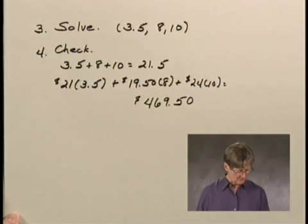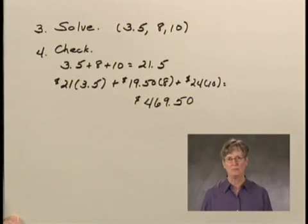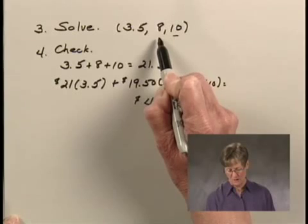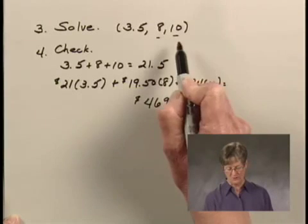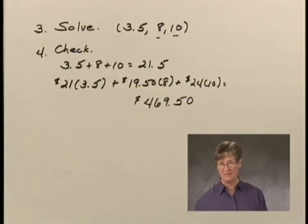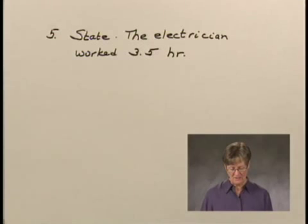And finally, we were told that the plumber worked 2 hours more than the carpenter. The plumber worked 10 hours, and the carpenter worked 8 hours according to our solution, and 10 is 2 more than 8, so that checks as well. We now have a solution to the problem, which we will state in Step 5. The electrician worked 3.5 hours.